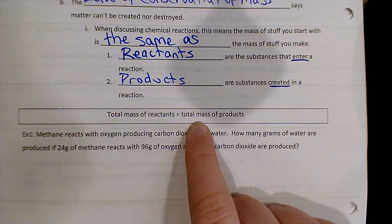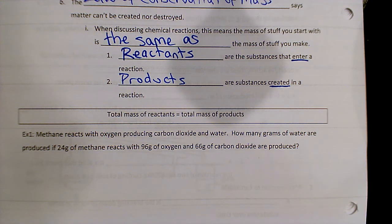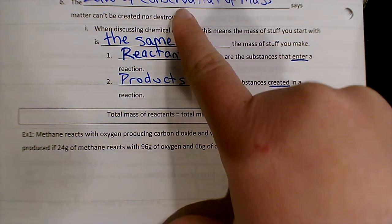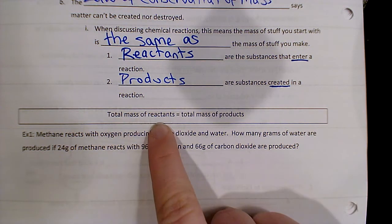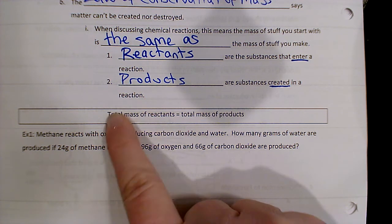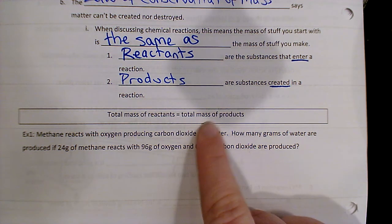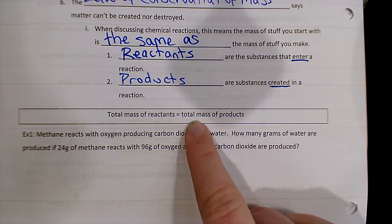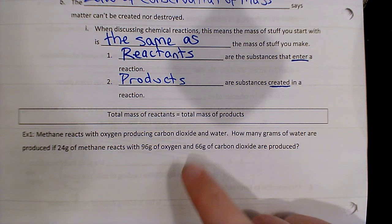So this is our main idea, and this is a formula, but this is just another way of writing this idea. The total mass of reactants, remember total means you add them up. So if I add up the total mass of the reactants, and I add up the total mass of the products, they're going to be the same.